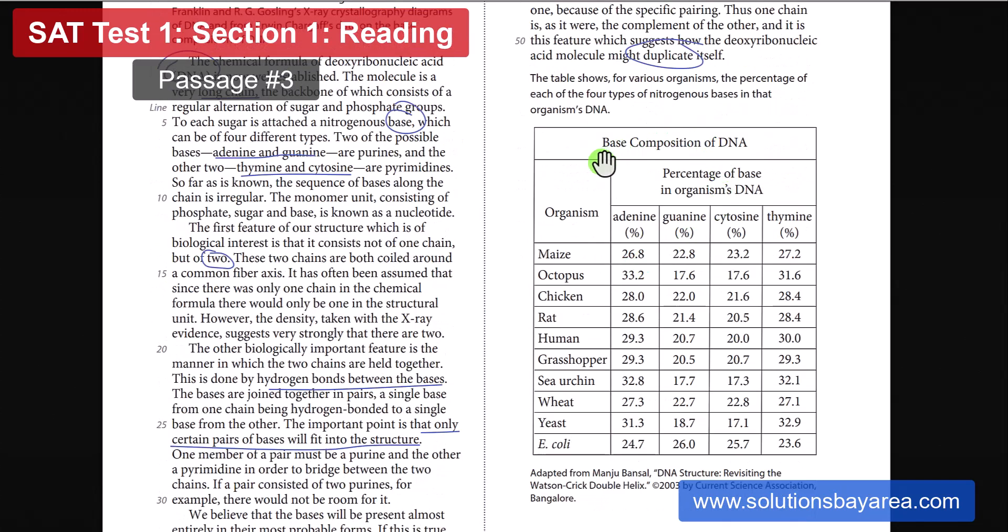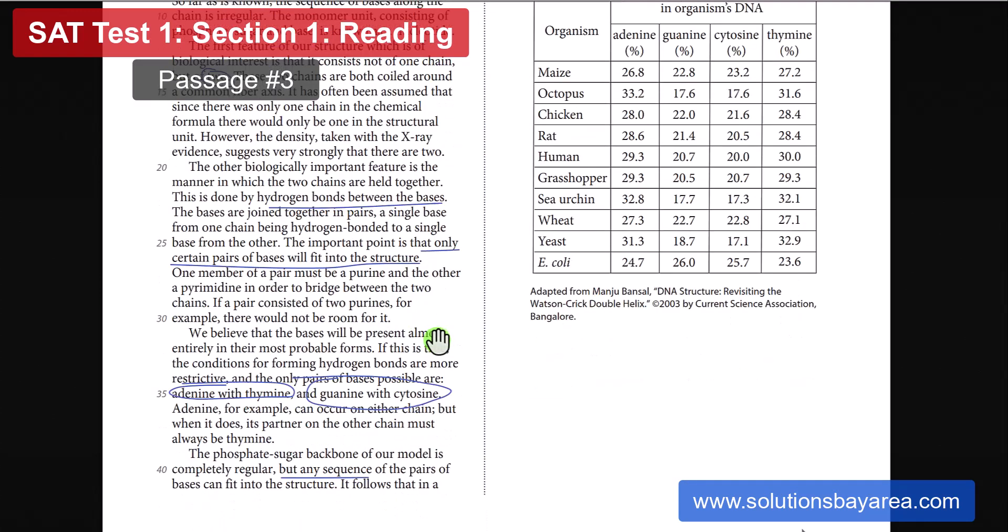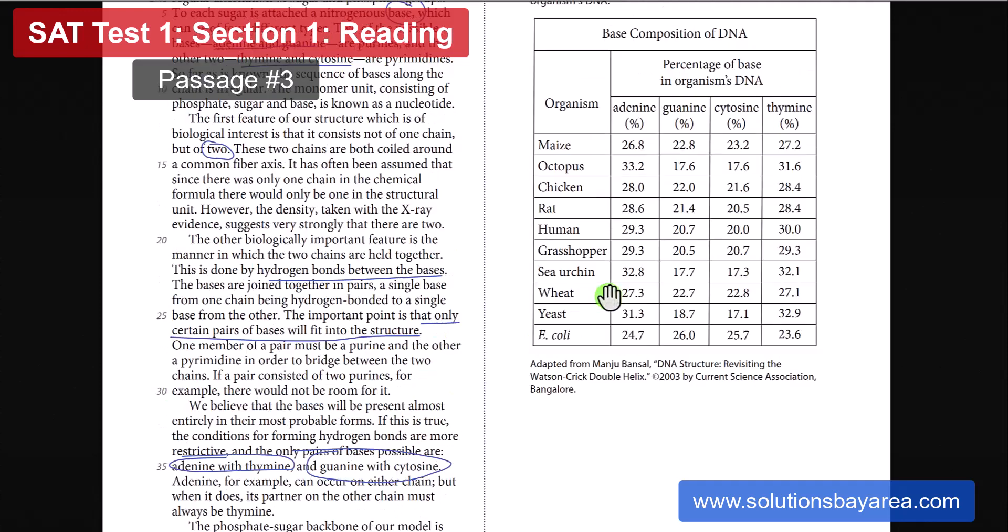Moving on to the table here. This is the base composition of DNA. Taking a look at this table, what stands out as being kind of an interesting fact? Well, it is not the fact that the percentages of all four are the same. That is only kind of right for the maize. Maize, by the way, is corn. But if you look at the other organisms, they are different in their percentages. Based on the pairing, adenine with thymine, guanine and cytosine, you will see that the adenine and thymine percentages are about the same. So you got 26.8, 33.2, 28.0. Over here, you got 27.2, 31.6, 28.4. Same goes for the guanine and cytosine. Those percentages kind of match up as well. And that's what you would expect based on the information that they have provided.